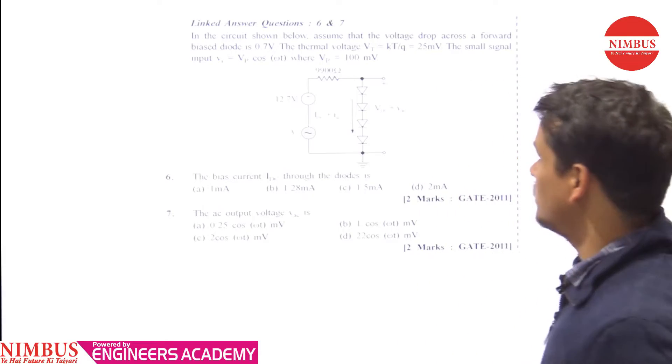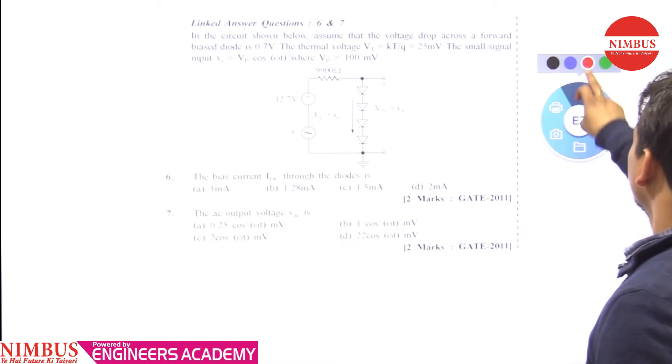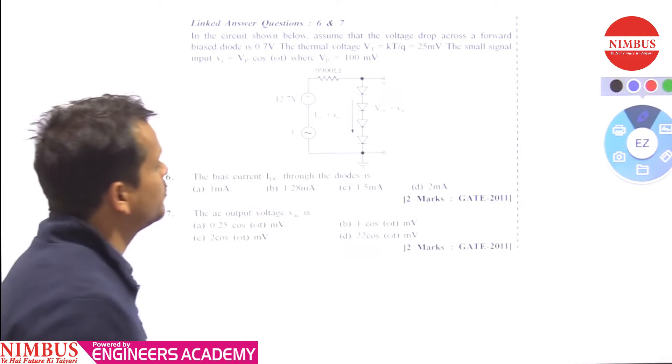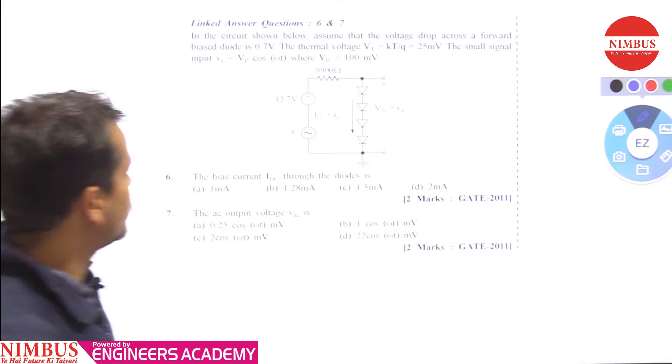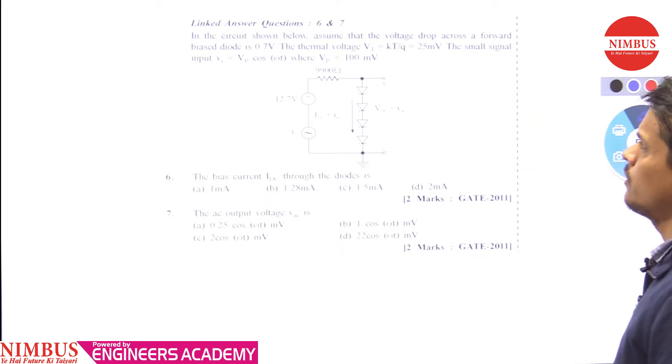Hello students, this is a linked question worth 2 marks. Let's read the question carefully. In the circuit shown below, assume that the voltage drop across a forward biased diode is 0.7V, the thermal voltage Vt equals 25mV, and the small signal input Vi equals Vp cos(ωt) where Vp equals 100mV.